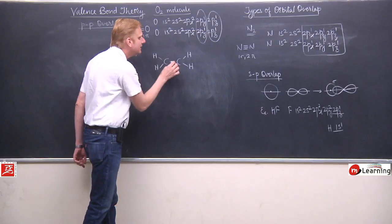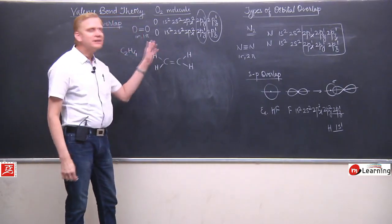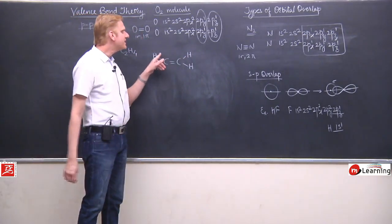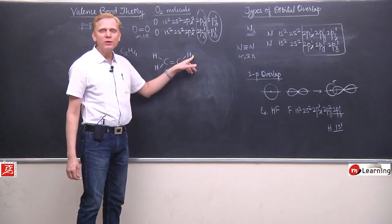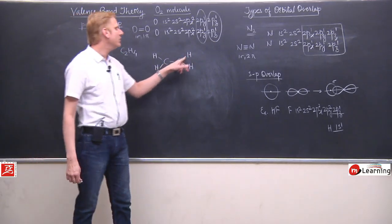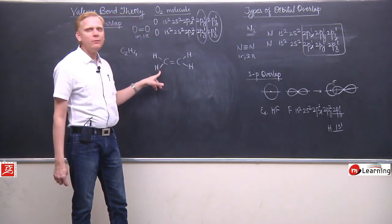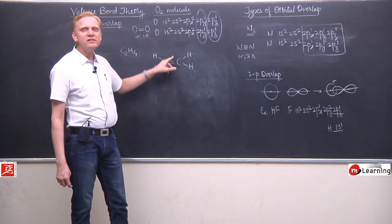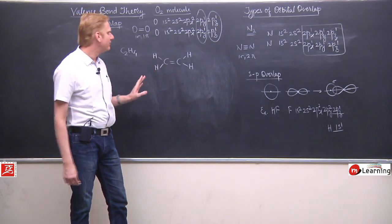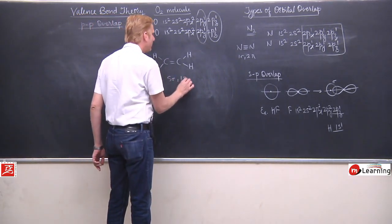One sigma and one pi — ye toh carbon atoms ke beech mein hai. Yadi mein poore molecule ki baat karta hoon, toh yaha par total five sigma bonds honge, because CH bond will also be counted. So double bond mein ek bond sigma aur ek bond pi bond ke form mein hoga — total five sigma and one pi bond.